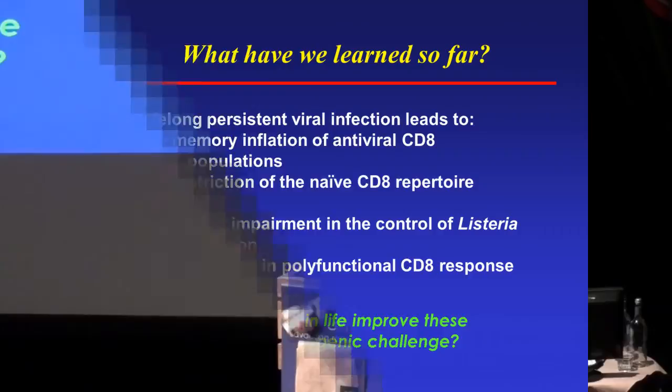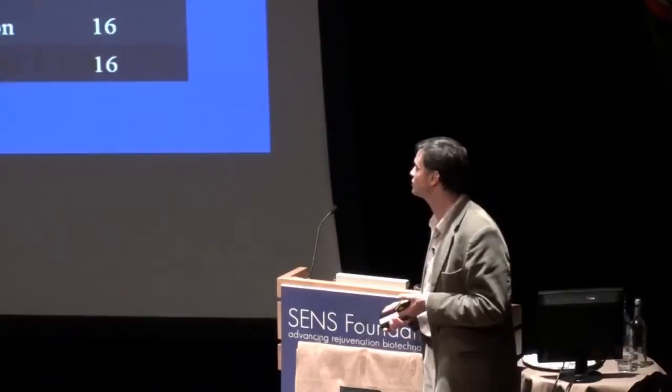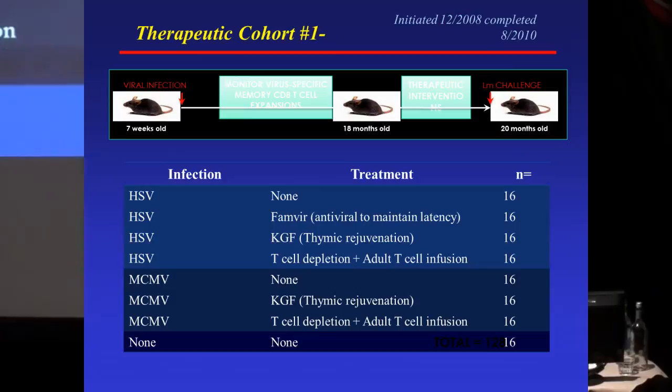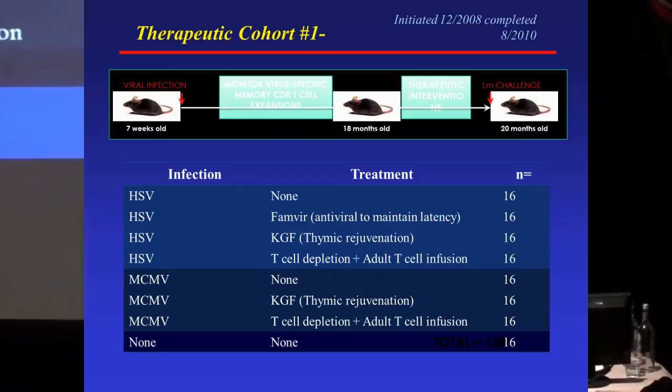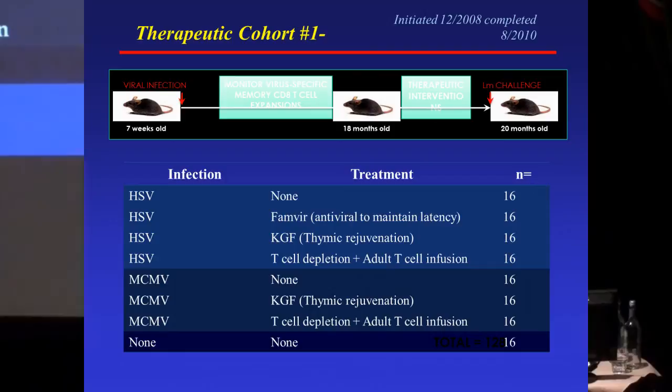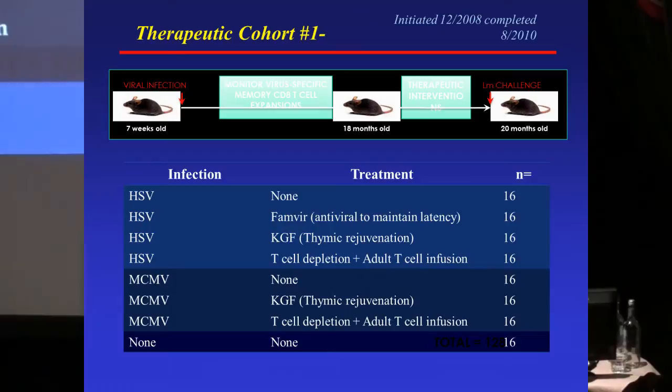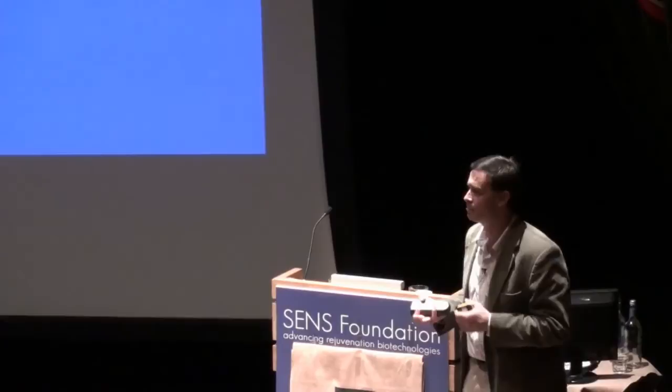Can interventions late in life improve responses to new pathogenic challenge? We set up several groups to try different interventions. Some animals got HSV and then a drug to quiet down HSV replication. In other animals we tried KGF — keratinocyte growth factor — supposed to bring the thymus back, in both MCMV and HSV groups. And for other groups, we asked: they accumulate large expansions of memory cells — what if we removed some T cells and gave them new young T cells? Would that work better? The long and the short: the drug didn't really work, and KGF didn't really work. But the transfer of new T cells after partial depletion did work.